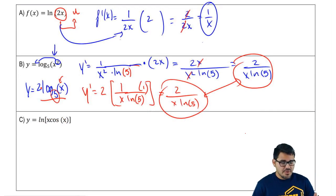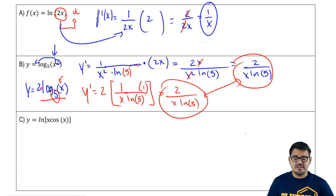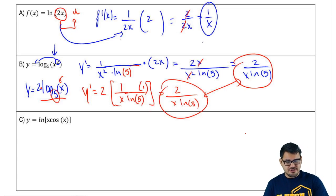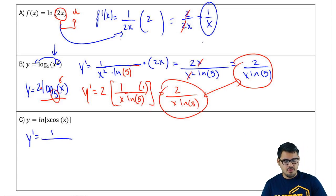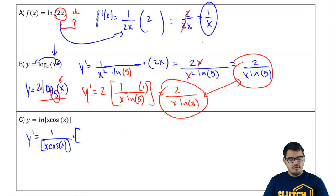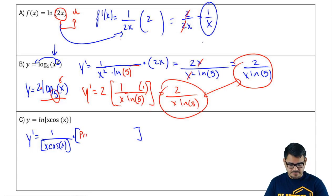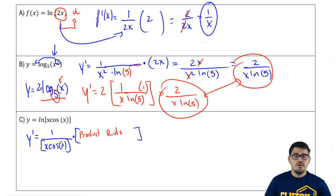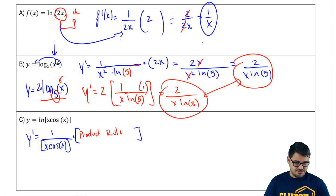Example C: find the derivative of ln(x·cos x). Starting directly, we'd have 1 over (x·cos x) times the derivative of (x·cos x), but that derivative requires a product rule — which I want to avoid. There should be an easier way.